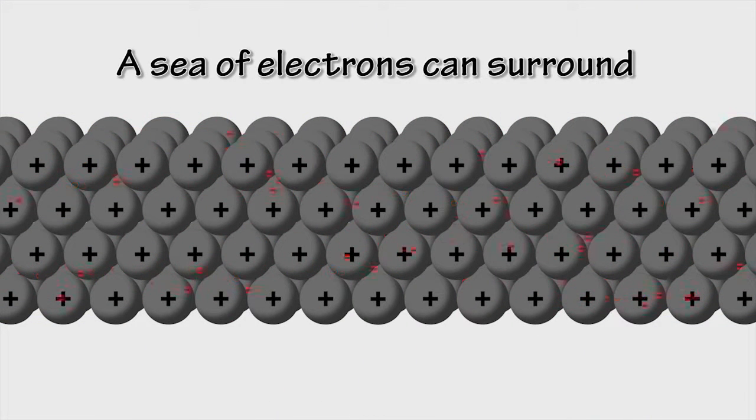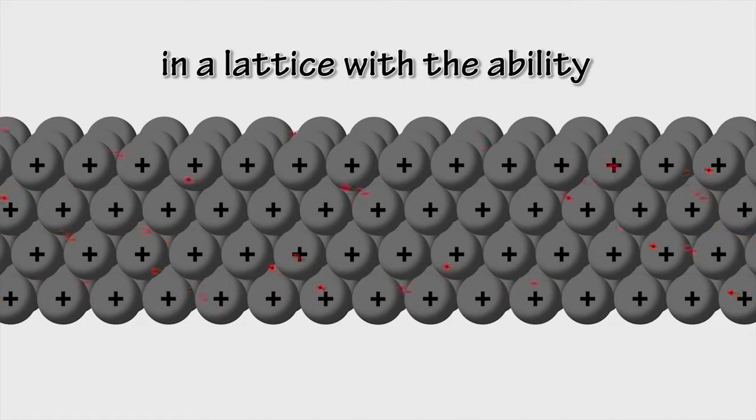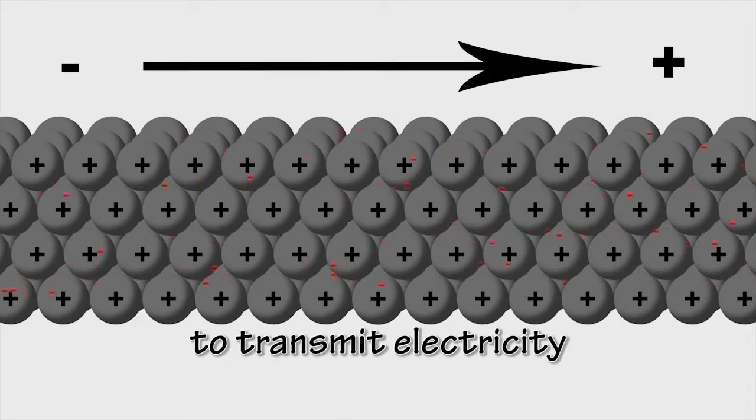A sea of electrons can surround metal cations that are found in a lattice with the ability to transmit electricity.